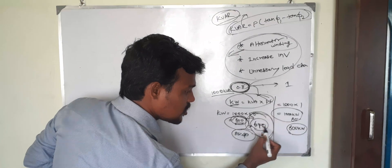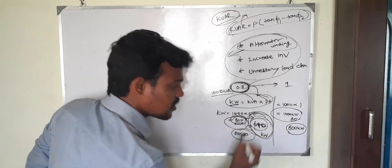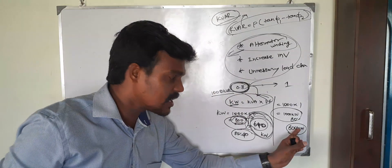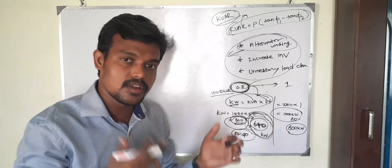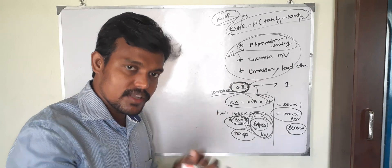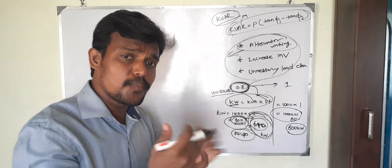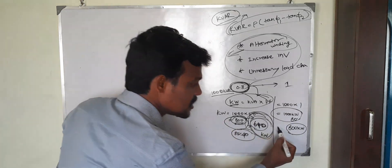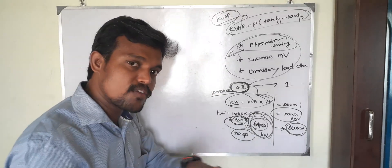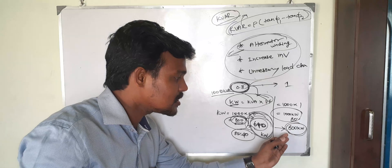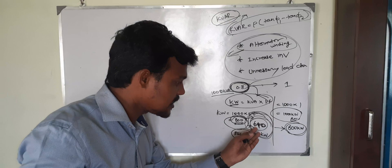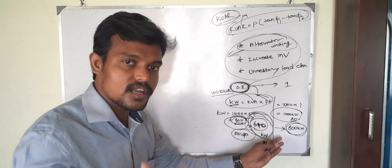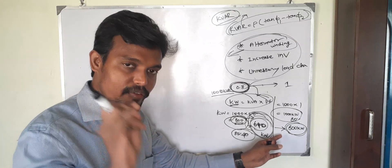At 80% load with unity power factor, the load comes to around 800 kW. But the DG is only designed to cater for 640 kW. If all the protection systems fail and the load increases to 800 kW, the alternator winding will get damaged because it is designed to cater for only 640 kW. This is the first reason we must switch off the power factor panel when the DG is running.